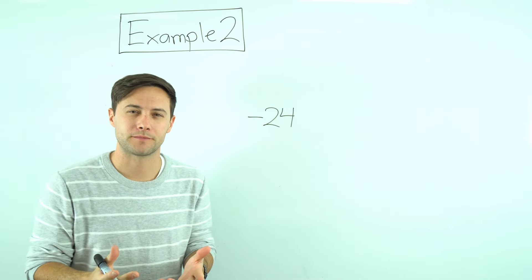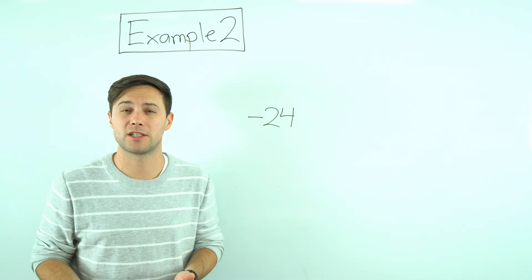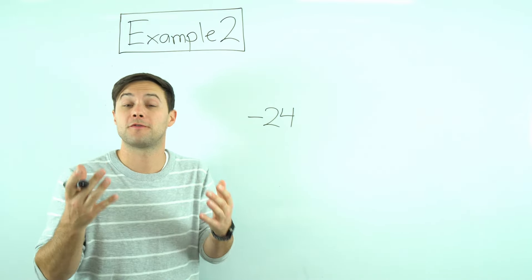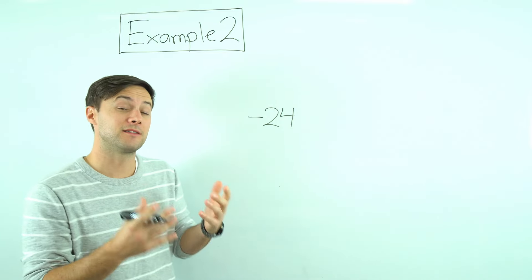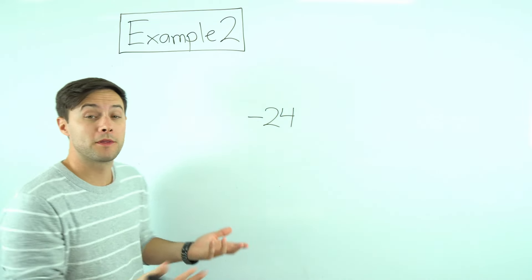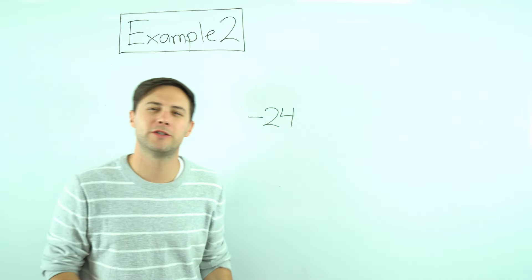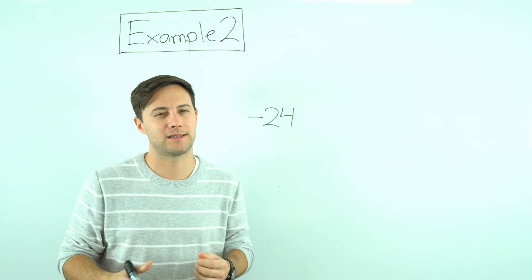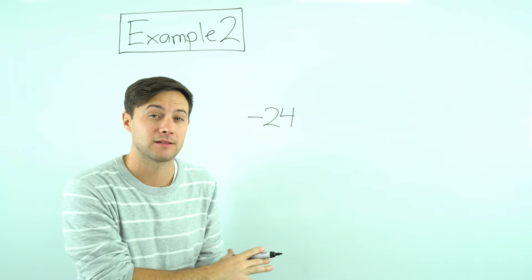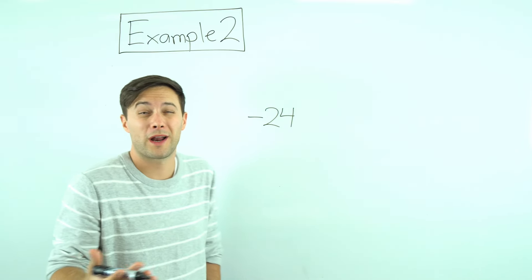What are we subtracting it from? We're subtracting it from the number of contestants that started the competition. We don't know that. That's what the question was asking. Write an equation you can use to find the number of contestants that started the competition. We don't know that. So what do we do with something we don't know? We make a variable out of it.